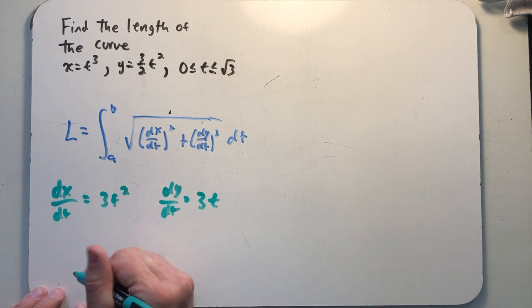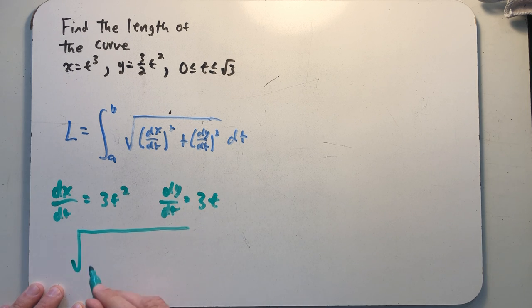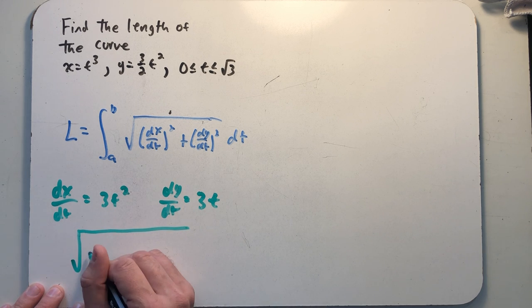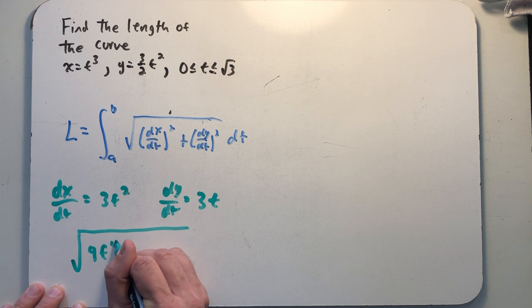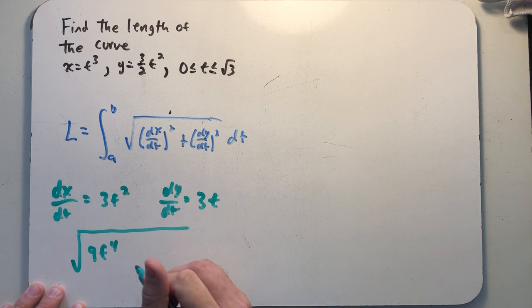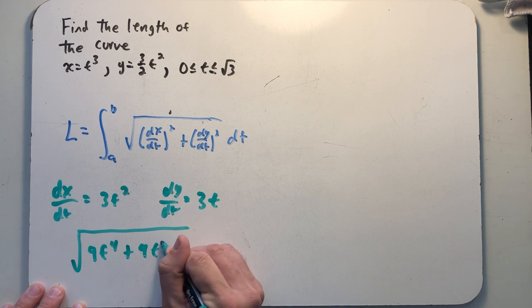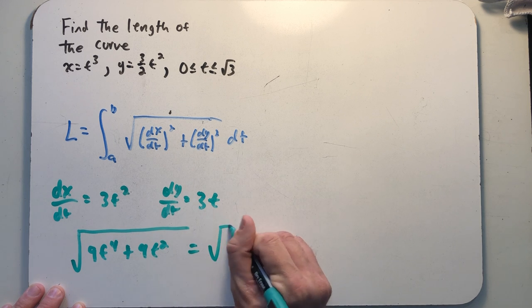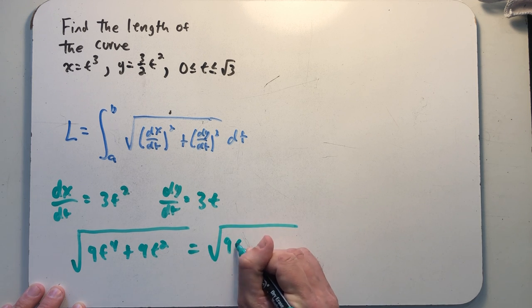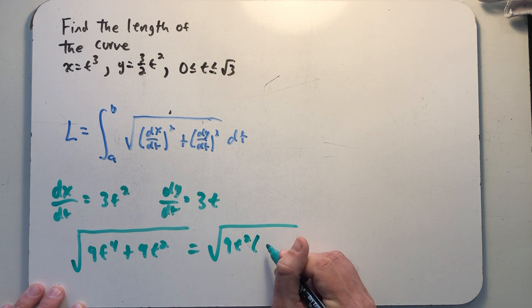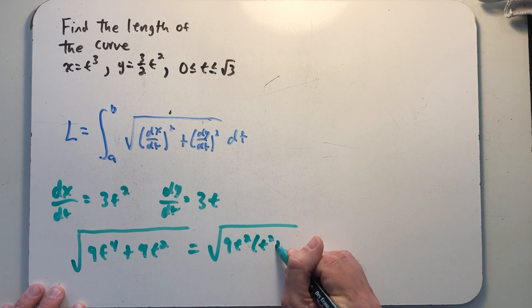I'm going to go on and just think about what the integrand is going to look like, so I'll have an easier time integrating. So I need dx dt squared, which would be 9t to the fourth. I need dy dt squared, which would be plus 9t squared. Just looking on the inside there, I know I could factor out a 9t squared, giving me a t squared plus 1.